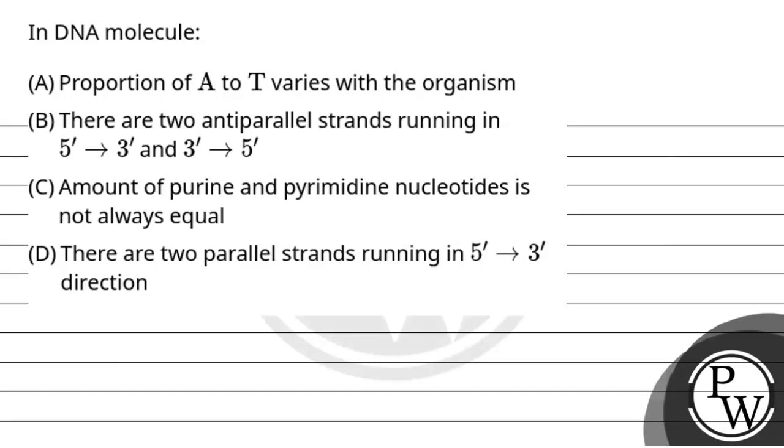Hello, so let's read the question. The question says in DNA molecule: A) the proportion of A to T varies with the organism, B) there are two antiparallel strands running from the 5' to 3' direction and from the 3' to 5' direction, C) the amount of purine and pyrimidine nucleotides is not always equal, and D) there are two parallel strands running in the 5' to 3' direction.